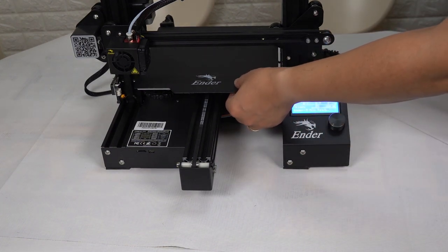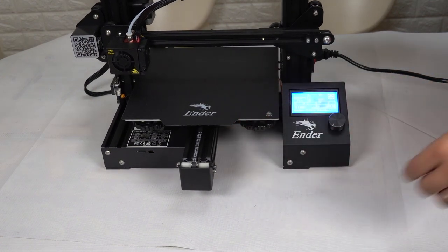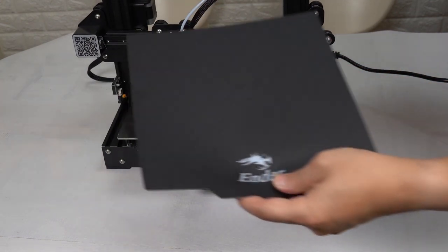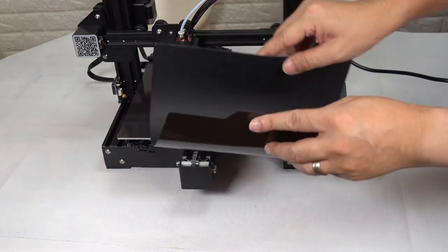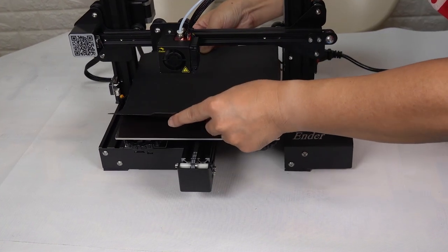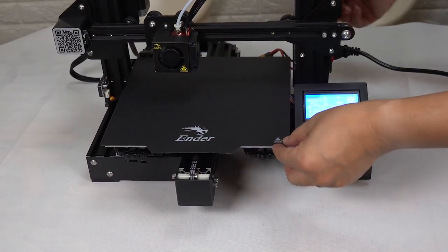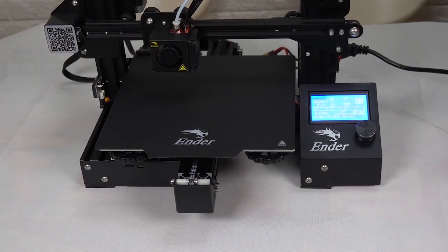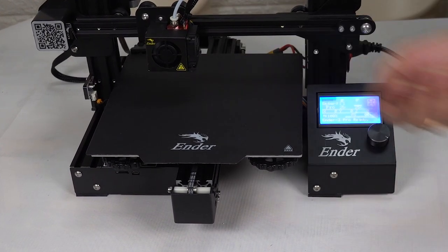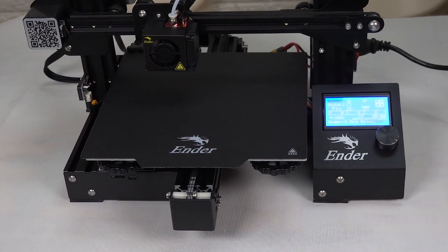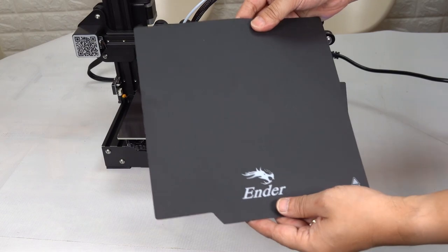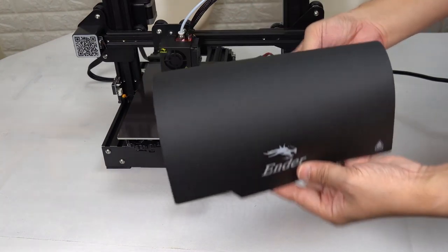Turn on the power now. It should be mentioned that the hotbed of Ender 3 Pro is not a piece of glass. Instead, it is a piece of magnet. The surface is frosted, and because it is magnetic, it can be attached to the hotbed without small clips. The frosted surface is not easy to damage, and because it is soft, it is easy to get printed parts out of bed.